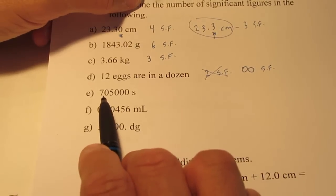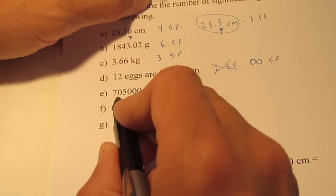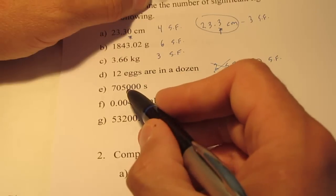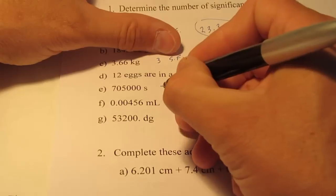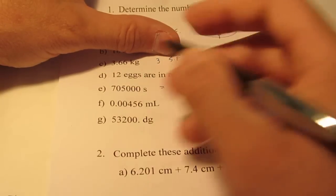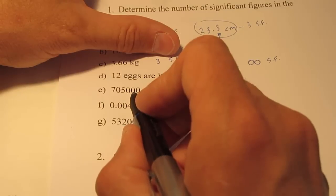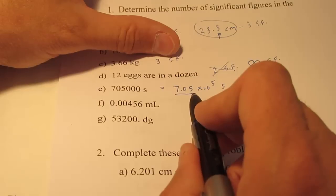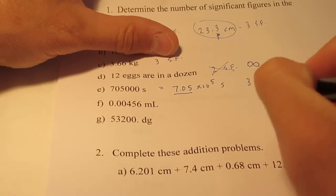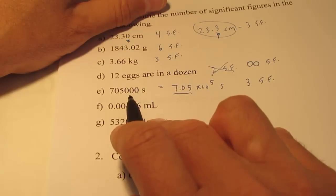How about letter E? We have 705,000 seconds. Now, we have a couple of things going on here. We do have a zero between non-zero digits, so that's significant. But then, we have these zeros at the end of the number that are to the left of the decimal. They're simply acting as placeholders. Can't I rewrite this measurement as 7.05 times 10 to the 1, 2, 3, 4, to the 5th number of seconds? So, you can see that these zeros at the end were not really that important. When I rewrote the number in scientific form, I didn't need them. If you don't need them, they're not significant. So, this measurement would have 3 sig figs only. So, if you have a question, just rewrite your value in scientific form. If the zeros are not needed, remember, they are not significant.